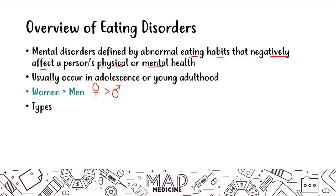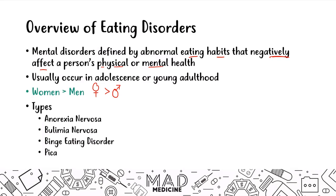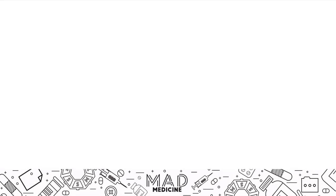There are four types we're going to be talking about today: anorexia nervosa, bulimia nervosa, binge eating, and pica. Let's start our conversation with anorexia, which is probably the most complex of all these disorders — we're going to knock out the heavy hitter first, and then continue on to the next disorders.